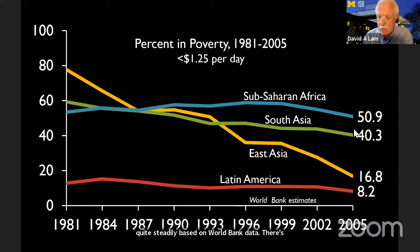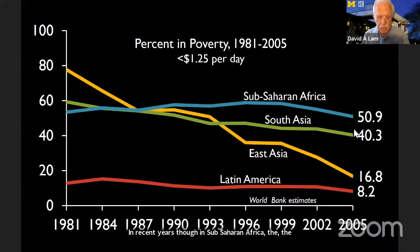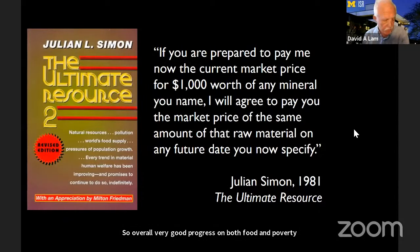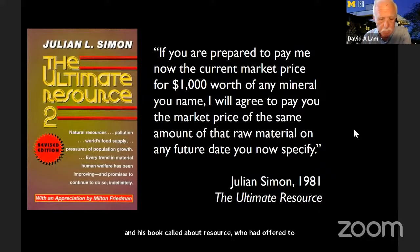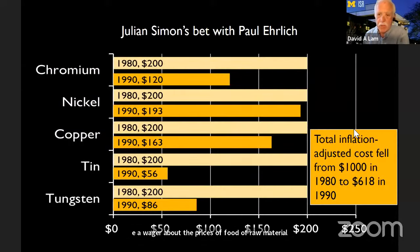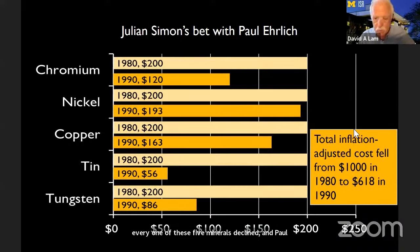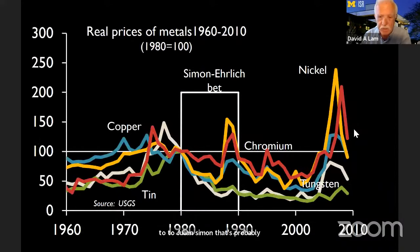Africa had a bit more trouble — per capita food production in 2009 was actually 7% lower than in 1960, as population increased faster than food production. Poverty had been declining quite steadily based on World Bank data, declining in every region, though in sub-Saharan Africa the decline was modest. Overall, very good progress on both food and poverty. On resources, I presented this fairly well-known result from Julian Simon and Paul Ehrlich's bet — the real cost of every one of five minerals declined over the bet period.